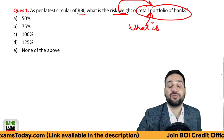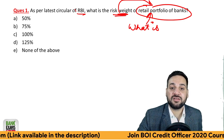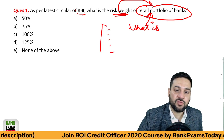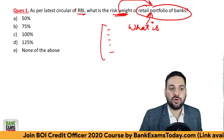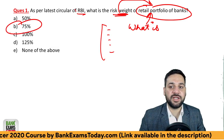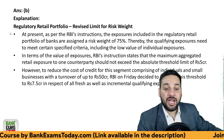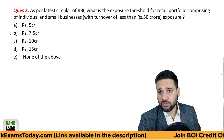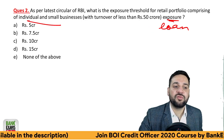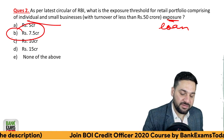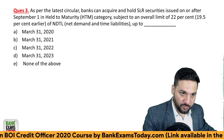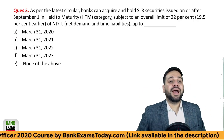Please watch my Basel norms video to understand risk weights — all assets a bank holds are assigned a risk weight. So the risk weight on the retail portfolio is 75 percent. The retail portfolio covers individuals and small businesses where the loan value — the exposure — is less than 7.5 crore.